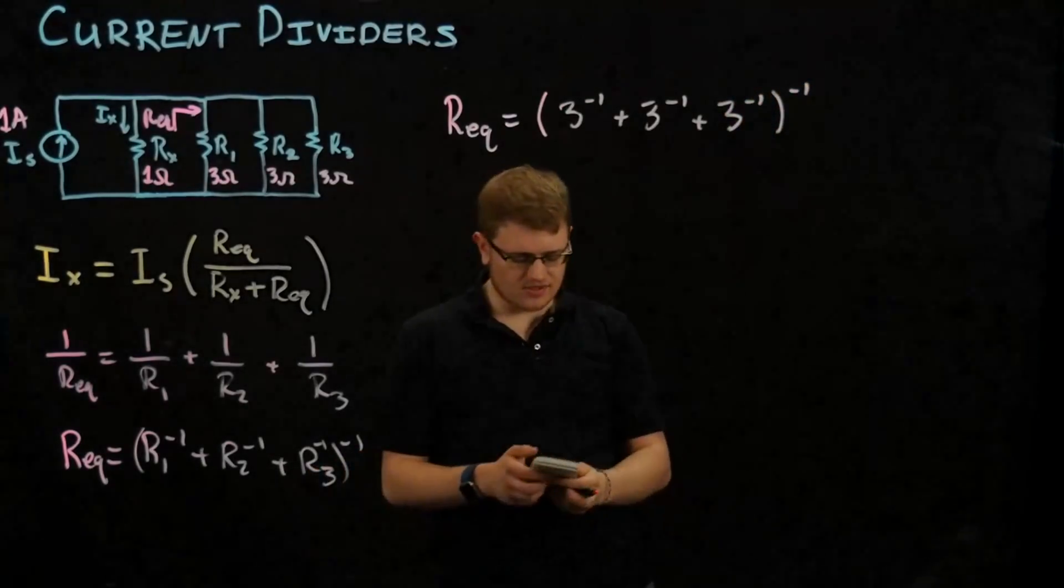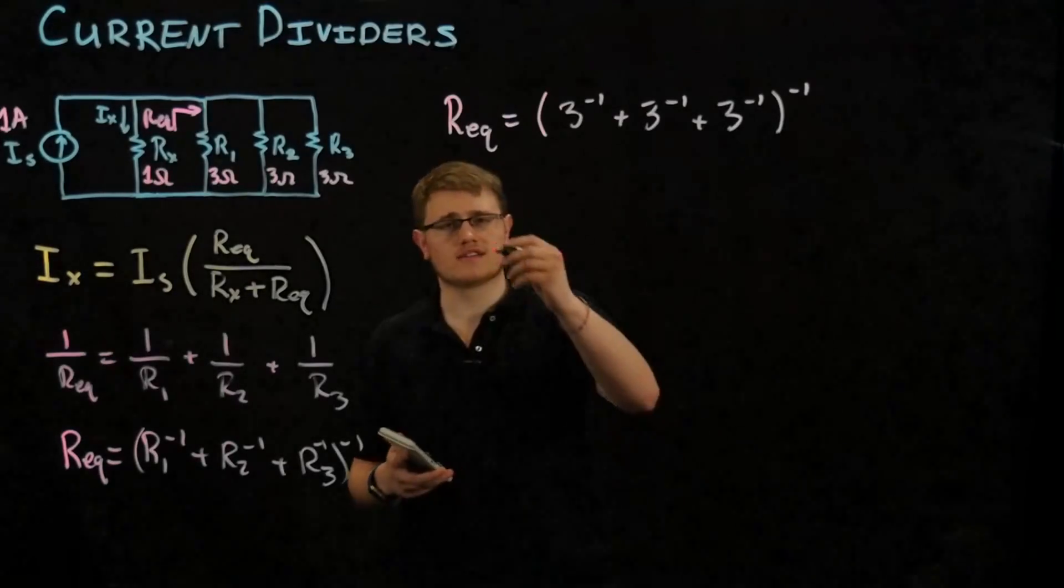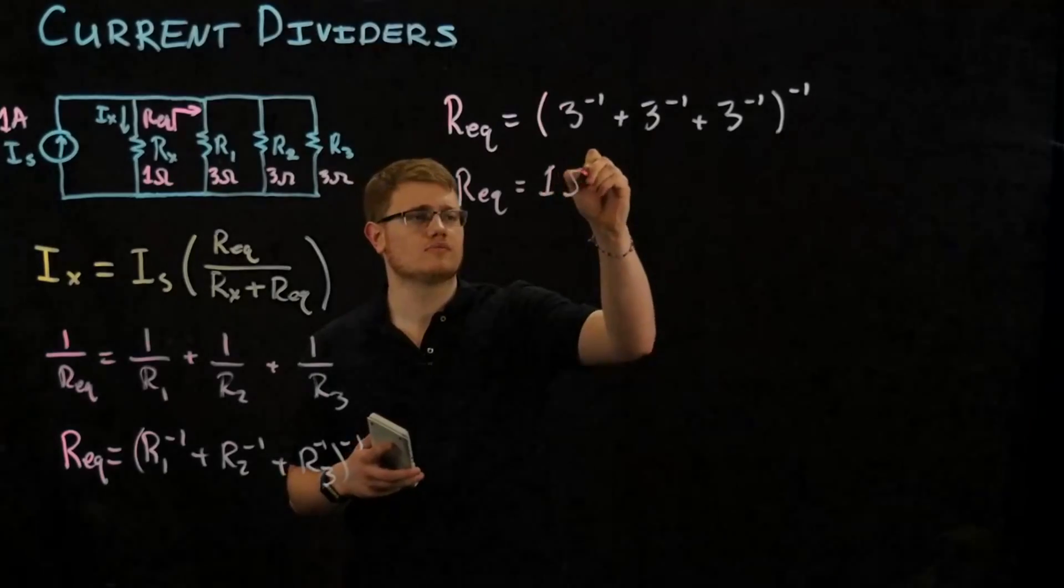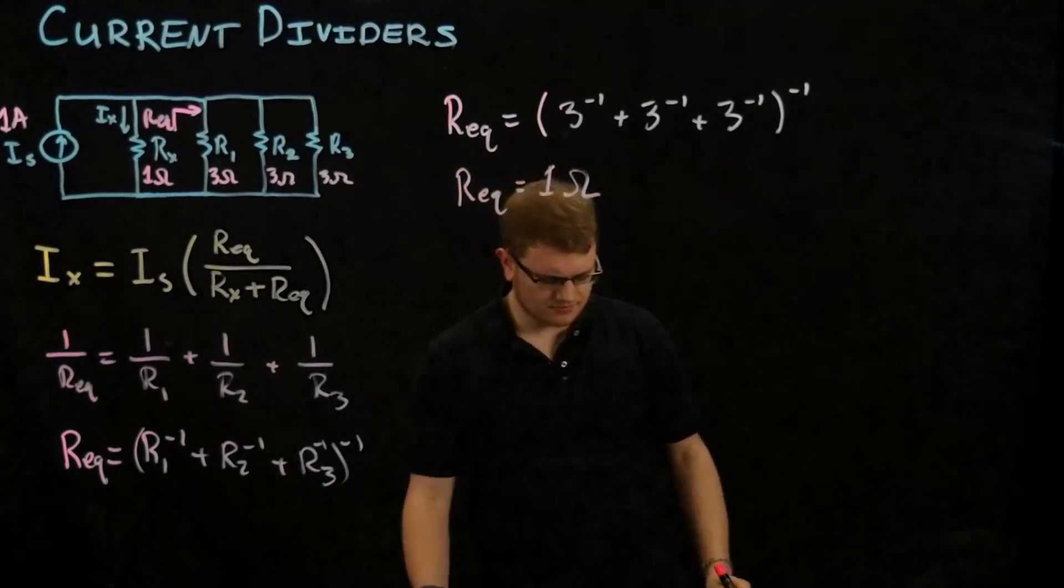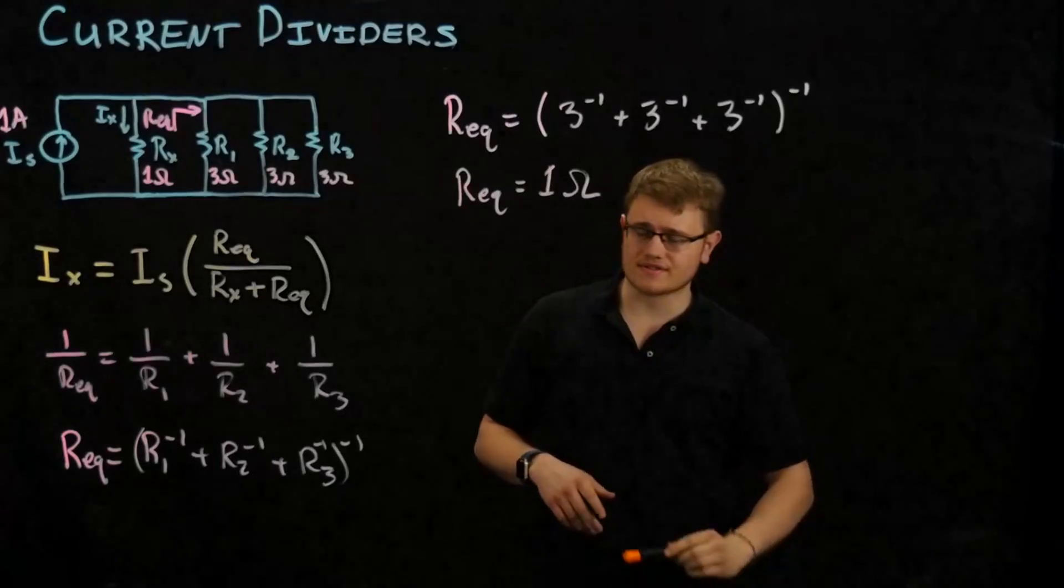And if we have our calculators, we could do that really quickly. Ah, nice. So R equivalent is equal to one ohm. That makes it really easy. I'm glad it's one ohm. Sheer coincidence, I'm sure.